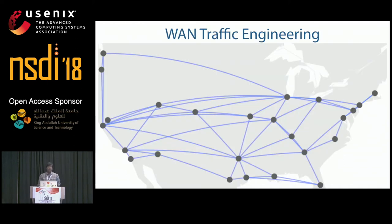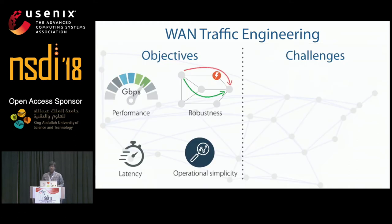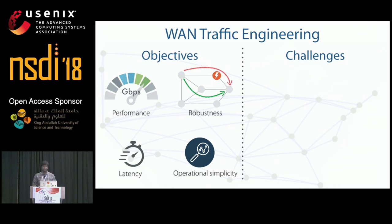To start with, in order to meet various competing objectives, operators of wide area networks use traffic engineering to steer traffic in desirable ways. A good traffic engineering system should provide high performance in terms of throughput and link utilization, be robust to failures, handle latency requirements such as low latency for customer traffic but relaxed requirements for bulk replication, and be operationally simple to root cause and analyze issues in production.